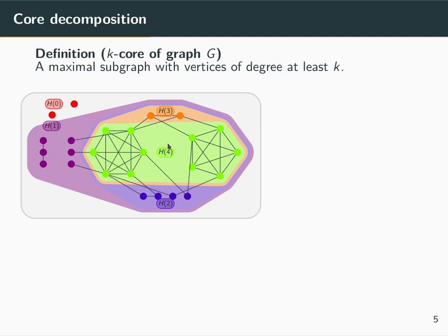In this way, we can define this hierarchy of cores and by extension define a partition of the vertices as shells. These vertices are assigned a core number equal to the highest core to which they belong.